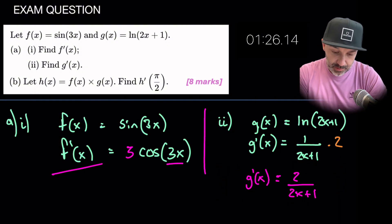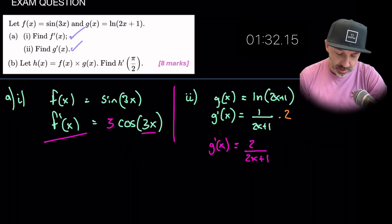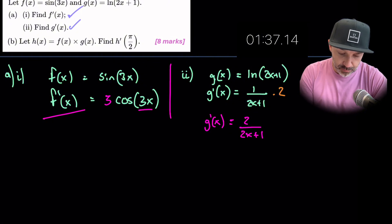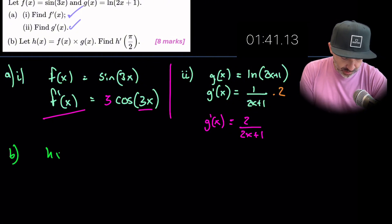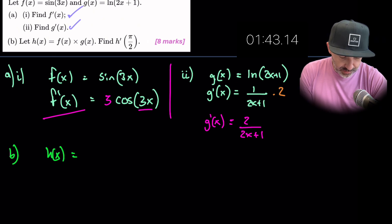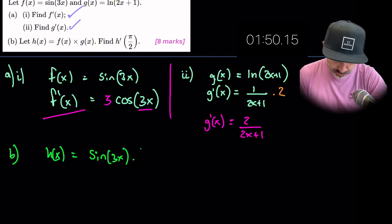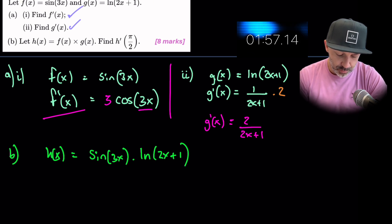So we've answered part 1 and part 2 of section a. Let's try and keep the question on the screen and let h of x equal the following. So h of x is found by multiplying these two functions together. So that would be sine 3x times by g of x which is natural log 2x plus 1 and it says find h prime. Now this is quite important here.